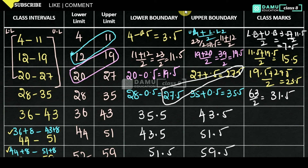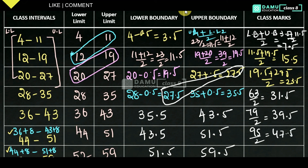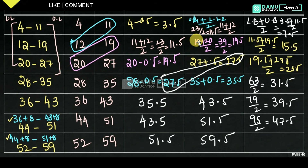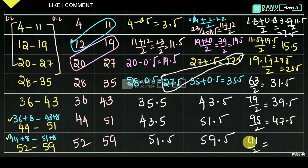For the fifth class: (35.5 + 43.5) / 2 = 79 / 2 = 39.5. For the sixth class: (43.5 + 51.5) / 2 = 95 / 2 = 47.5. For the seventh class: (51.5 + 59.5) / 2 = 111 / 2 = 55.5. These are all the class marks.